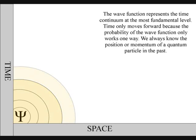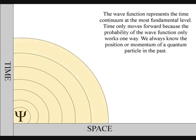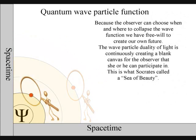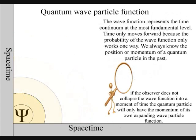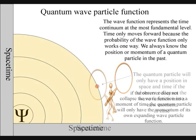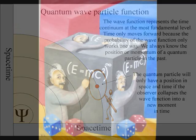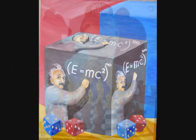When we observe only one atom, we see an expanding quantum wave particle function that the observer can collapse into a quantum particle that will have its own position in time and space that never existed before the wave function collapsed. This gives us the uncertainty principle of quantum physics, and it also gives us free will to create our own future spacetime.